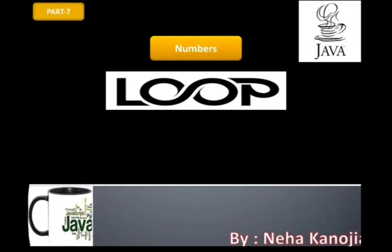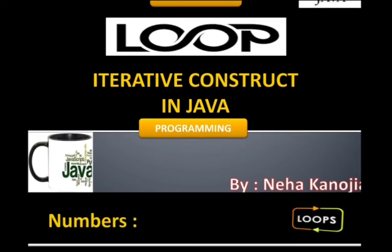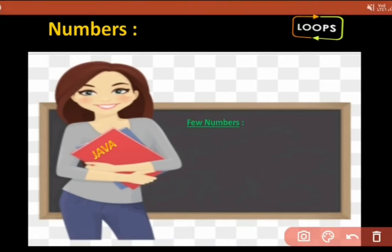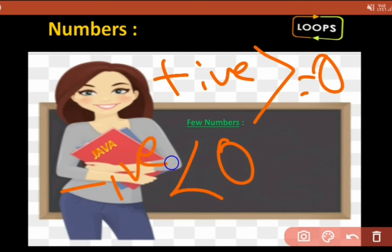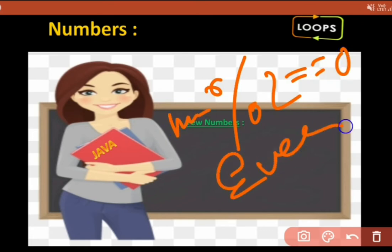In this video I want to consider a few programs on numbers. You all know a few number types: even numbers, odd numbers, positive numbers, and negative numbers. For positive numbers we use values greater than zero, and zero can also be considered positive as it is neutral. For negatives we use less than zero, and for even numbers — divisible by two — we use mod two equals zero to check whether a number is even or odd.